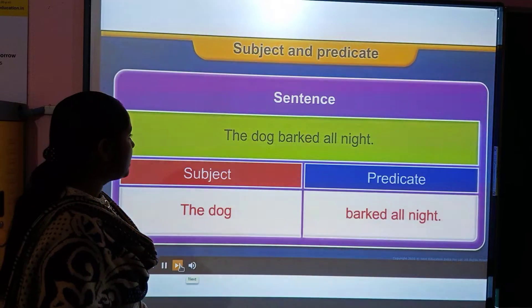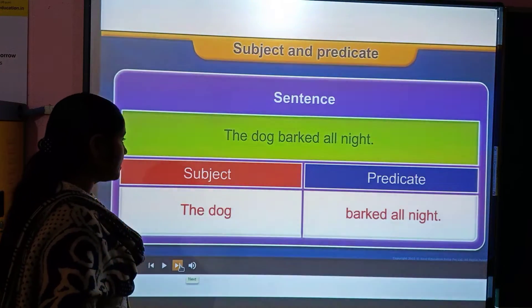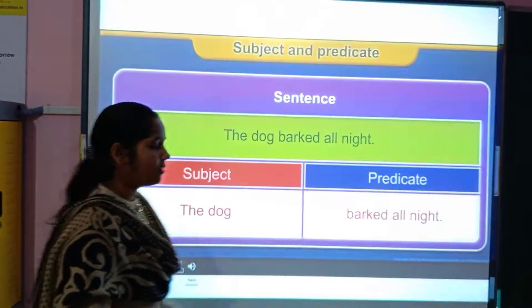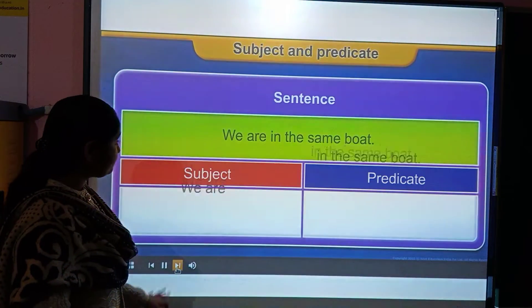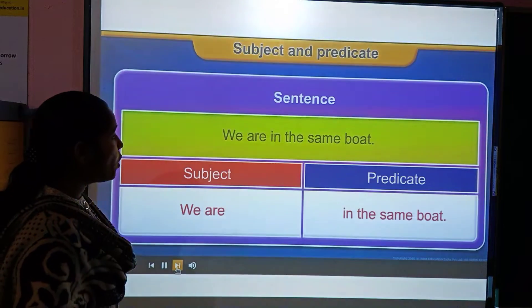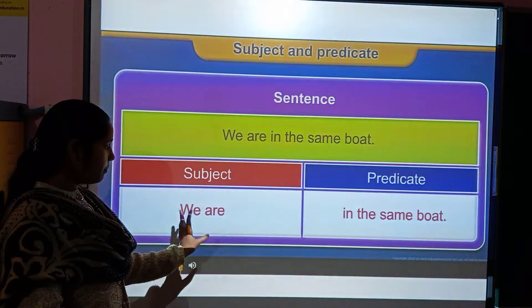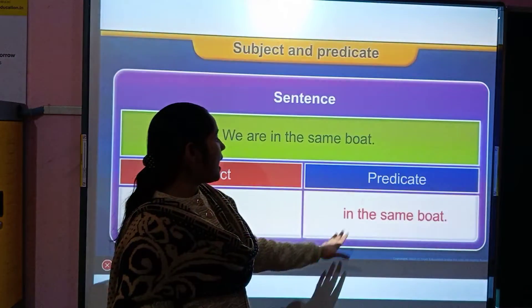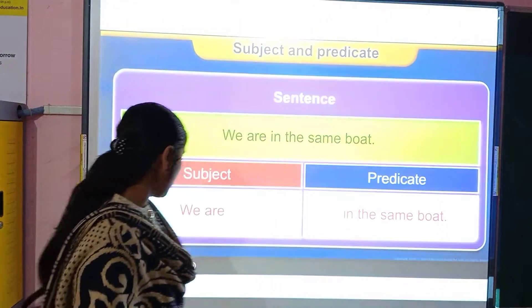see, the dog walked all night, subject and predicate. The dog is the subject, walked all night is the predicate. We are in the same boat. We are - both is a pronoun. Can you see, both are in the noun and in the same boat is the predicate.